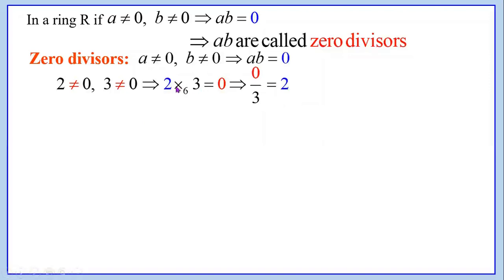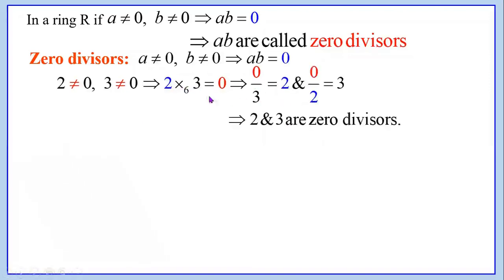Similarly, we can write 0 divided by 2 equals 3. Therefore 2 and 3 are zero divisors. The definition of zero divisors: A not equal to 0, B not equal to 0 implies A times B equals 0. This is two non-zero numbers whose product equals 0. In the above example, 2 and 3 are called zero divisors, as well as 3 and 4 are also known as zero divisors.